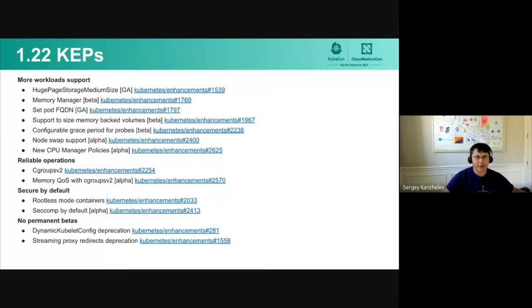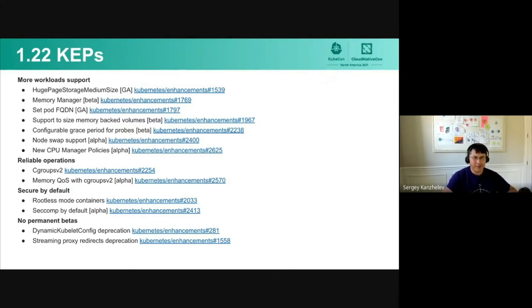I don't want to go into details of every single KEP we've been working on for 1.22 — you can go to the previous talk for details. I just want to highlight that KEPs are by no means ordered in any priority order; priority is different for everybody. Some people care about some features, others care about different features. I ordered them by KEP number, which you can see at the end of every link.